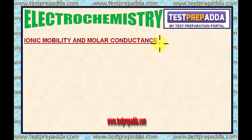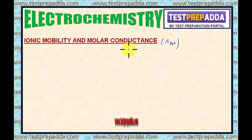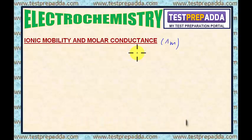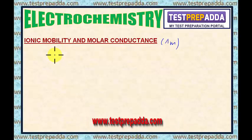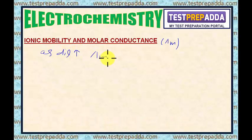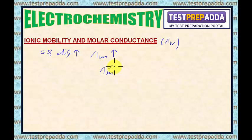In the previous session of electrochemistry, I talked about the variation of molar conductance with concentration, or better said, dilution. As dilution increases, molar conductance increases and reaches its maximum value, which we call molar conductance at infinite dilution, or molar conductance at zero concentration.